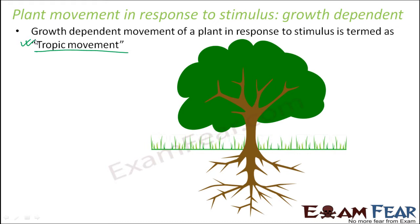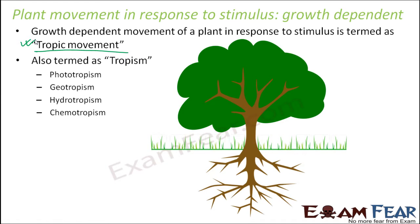One example of tropic movement is phototropism — the movement of the plant in response to light. During the discovery of auxins, it was seen that plants tend to bend towards the direction of light. The stimulus is light and the response is the bending of the plant. That bending is related to growth because it happens because of the growth hormone — some part of the plant grows more than the other. So this growth dependent movement in response to a stimulus is called a tropic movement, also termed as tropism.